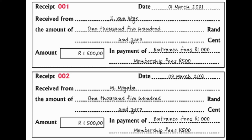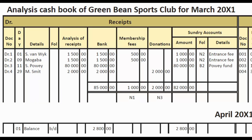The first receipt: we received money from S van Beek — entrance fees $1,000 and membership fees $500. They did not say anything about entrance fees being capitalized, so we treat entrance fees as normal income. In the cash book under receipts, write S van Beek. The total paid was $1,500 in both the analysis column and the bank column. In the membership fees column write $500, and in the sundry accounts column write $1,000 with the detail 'entrance fee.'